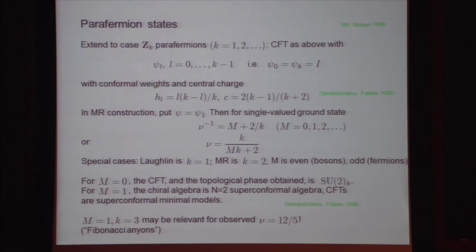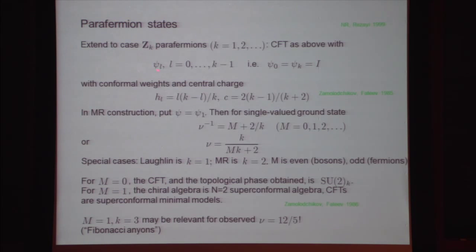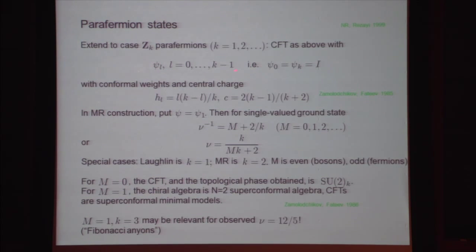Here's a generalization beyond that example — a whole series of states. We can more generally use Z_K parafermions instead of a Majorana field. In this case, the parafermion field Psi 1, fused with itself repeatedly, eventually when we get to Psi_K we recover the identity, so we only have K distinct parafermion operators.